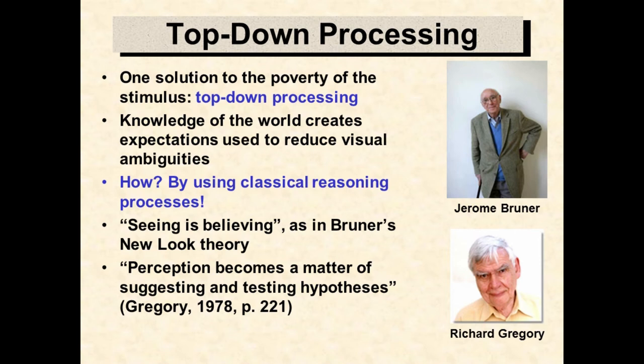Classical cognitive science has a standard solution to the problem of underdetermination. It assumes that perception is a form of cognition, a form of reasoning. We use our beliefs and expectations to provide information that is missing from the proximal stimulus. The information we provide is sufficient to generate a unique interpretation of the visual world. Psychologist Richard Gregory argues that perception becomes a matter of suggesting and testing hypotheses — seeing is believing.